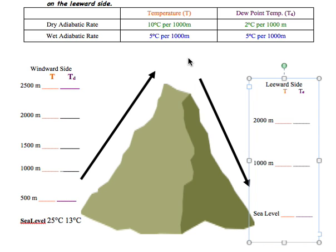Next, notice the dry adiabatic rate. This is the rate at which air cools because it's expanding — like the canned air we played with in class. The canned air got colder simply because we expanded it. That dry adiabatic rate is shown in green. Also notice these values are per thousand meters, and since our increments go up by 500 meters, we'll use half the value.